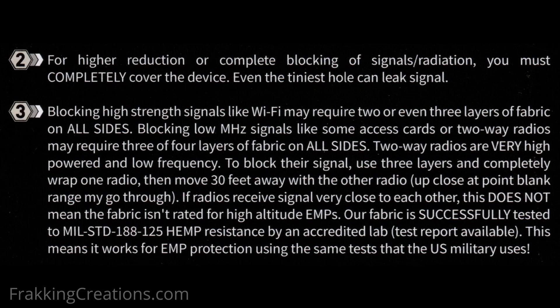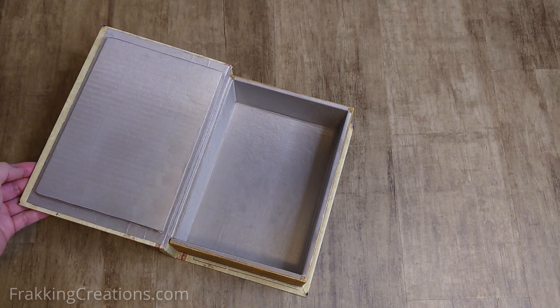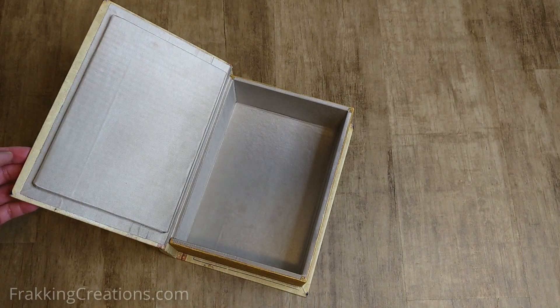If you look at the tip sheet provided, it mentions that even the tiniest hole can leak signal and that high strength signals like Wi-Fi may require two or three layers of fabric on all sides for it to be blocked completely. The single layer of shielding is not enough so back to the drawing board to improve the shielding.